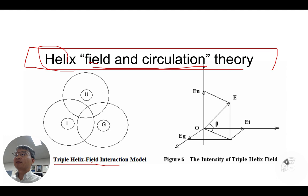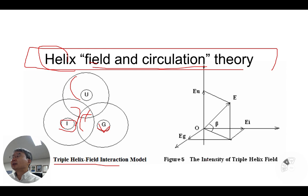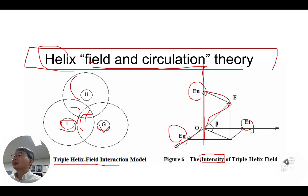University, industry, and government each have their own sphere — their own space — which Etzkowitz calls a field. This field has some kind of intensity in three dimensions: intensity of the government, intensity of the industry, intensity of the university, and then a synergic intensity. I expanded this concept into the helix field and circulation theory. It is not yet a full theory, but it will become one based upon the accumulation of empirical studies.